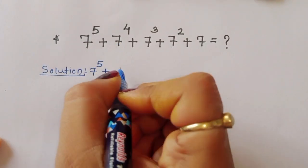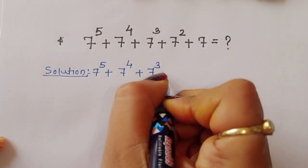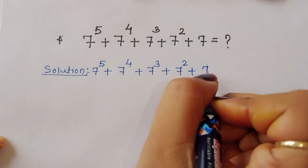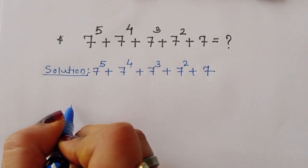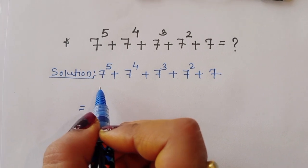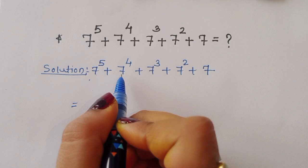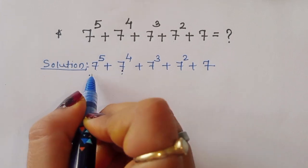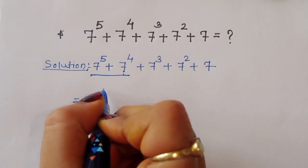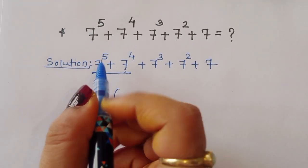So the given question is: 7 power 5 plus 7 power 4 plus 7 power 3 plus 7 power 2 plus 7. Now, if we look at this expression, we can take 7 power 4 as common from the first two terms.